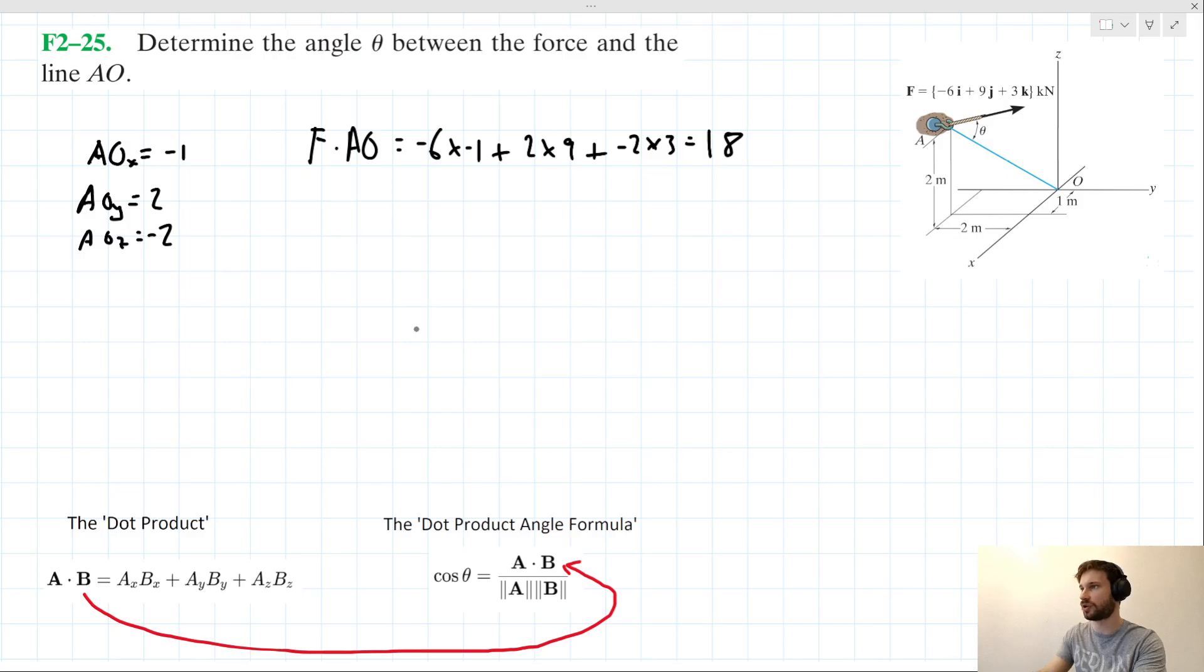OK, so we've got the dot product here. It looks like to fulfill the requirements of this dot product angle formula, we also need the magnitudes. So we can say the magnitude of AO, that's going to be the square root of 1 squared plus 2 squared plus 2 squared, which is going to be the square root of 9, which is 3.